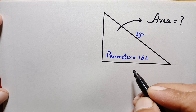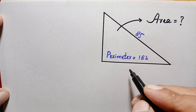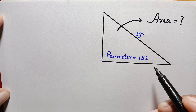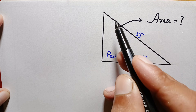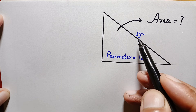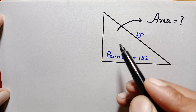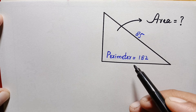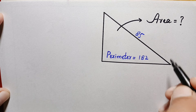Hello everyone, you are welcome. Today we have a very interesting geometry math problem. We have a right angle triangle whose perimeter is given as 182 units and its hypotenuse is given as 85 units. Our job is to find out the area of this right angle triangle.